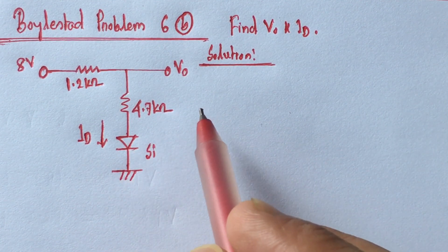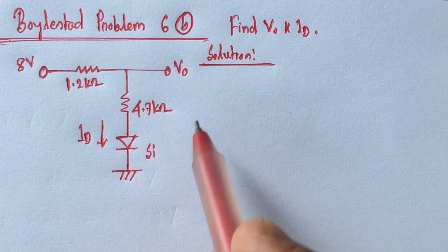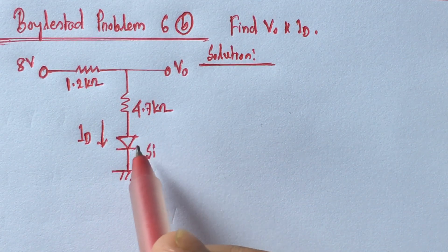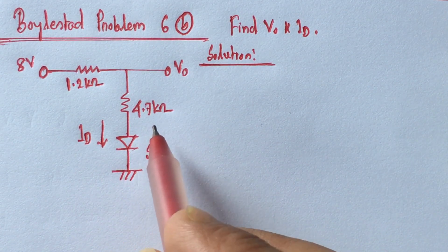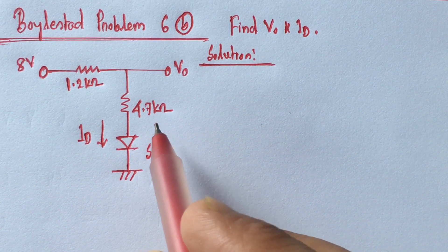This is a silicon diode. To solve the problem, at first we have to identify the state of the diode - either the diode is forward biased or reverse biased, and either the diode is on or off.